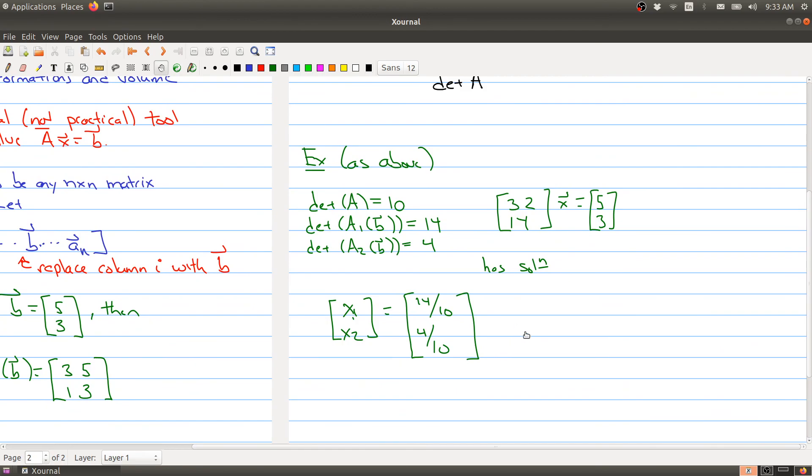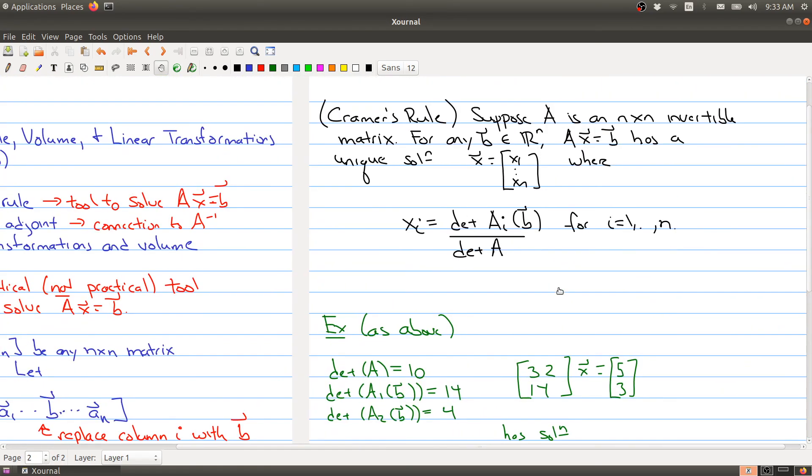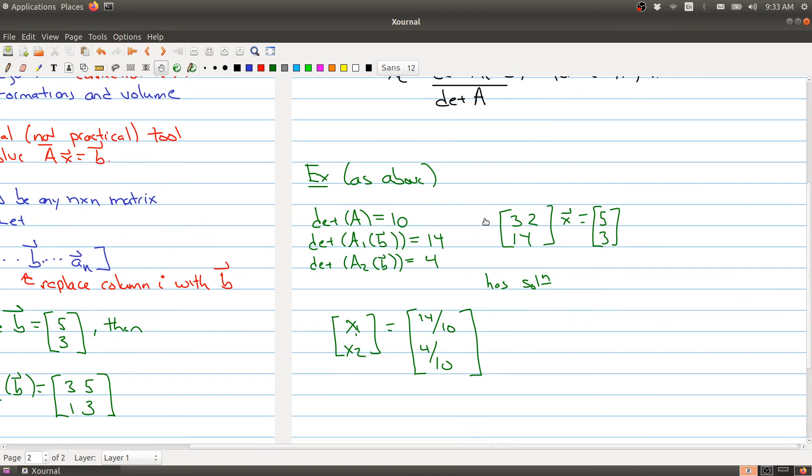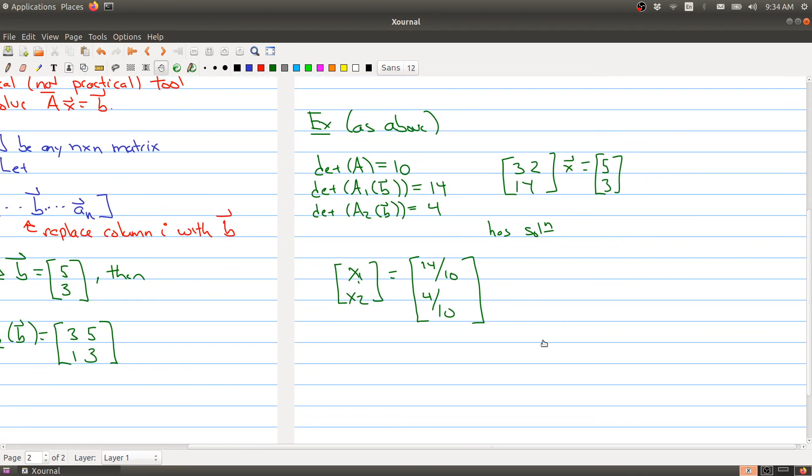But as you can see, why we would call it more of a theoretical tool and not a practical tool is because once these matrices start getting of any reasonable size, say even a 5 by 5 matrix, you're having to compute the determinant of at least n plus 1 matrices. And so as those matrices get larger, it becomes harder and harder to compute. But anyway, Cramer's rule is a handy rule to have. We'll take a little break here, and in the next part, we'll talk about how we can find a formula for the inverse of a matrix using Cramer's rule.